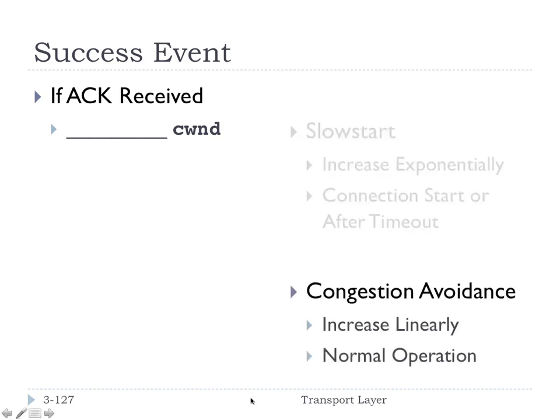The second mode is called congestion avoidance, and it's more of the normal operation mode. In this case, the congestion window increases linearly — we increase it by one each time, which is akin to the sawtooth graph we just saw. So those are our two main modes: slow start and congestion avoidance. If an acknowledgment is received, we increase the congestion window — either exponentially in slow start or linearly in congestion avoidance.